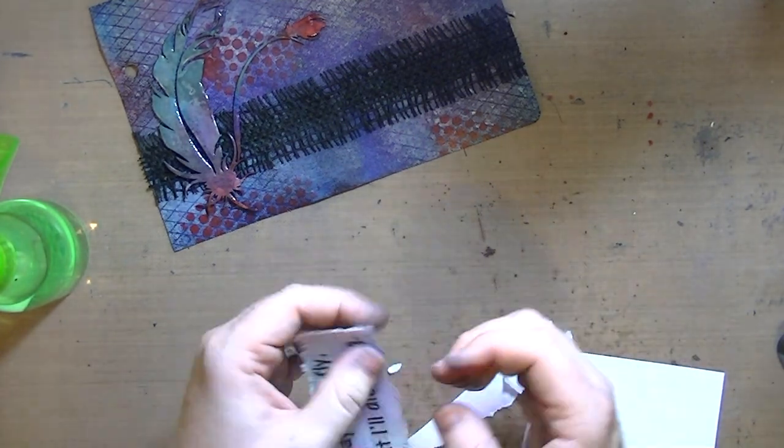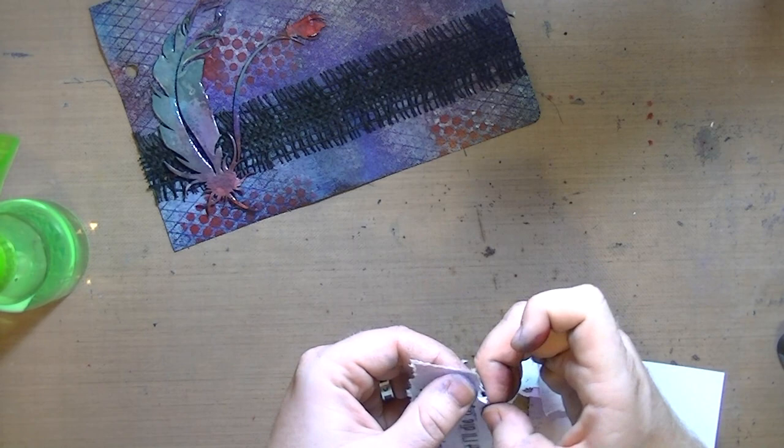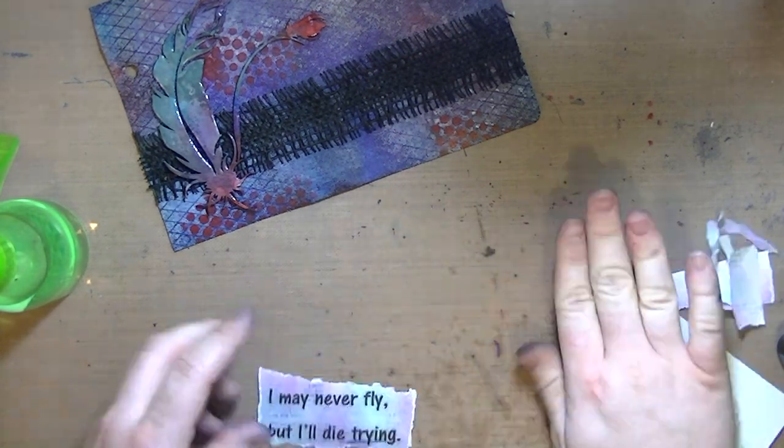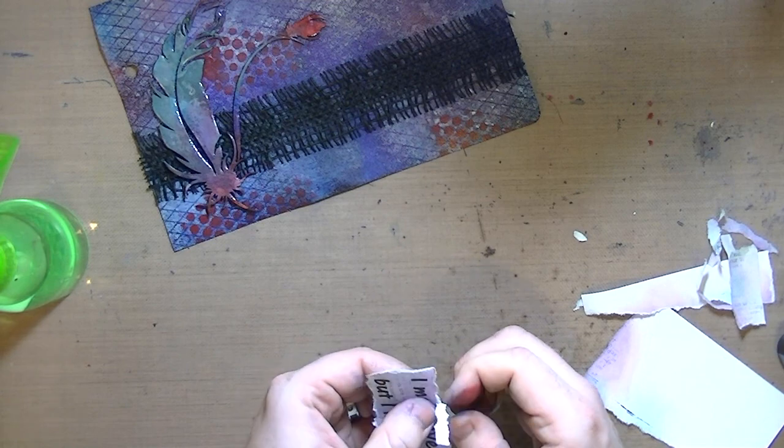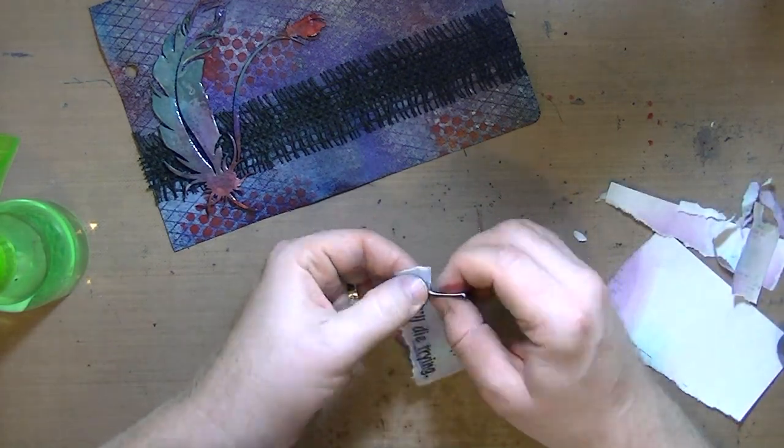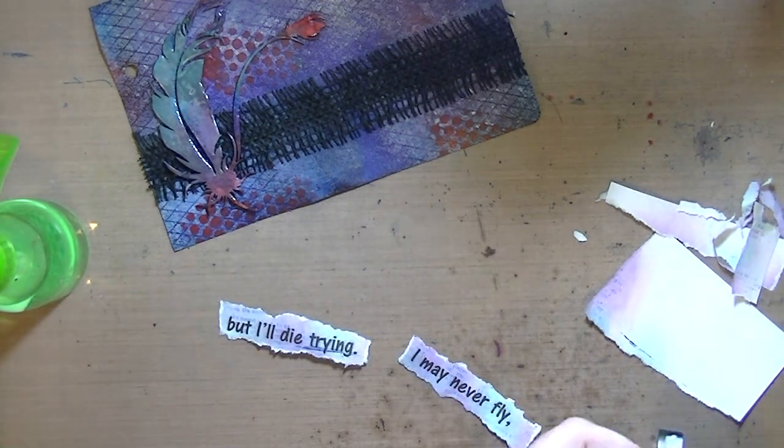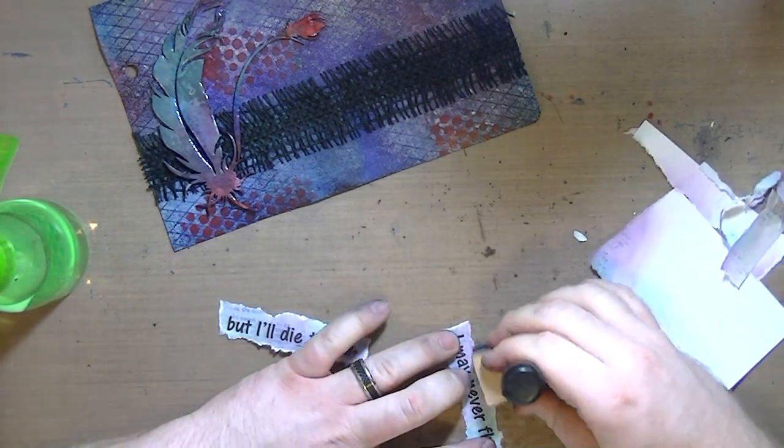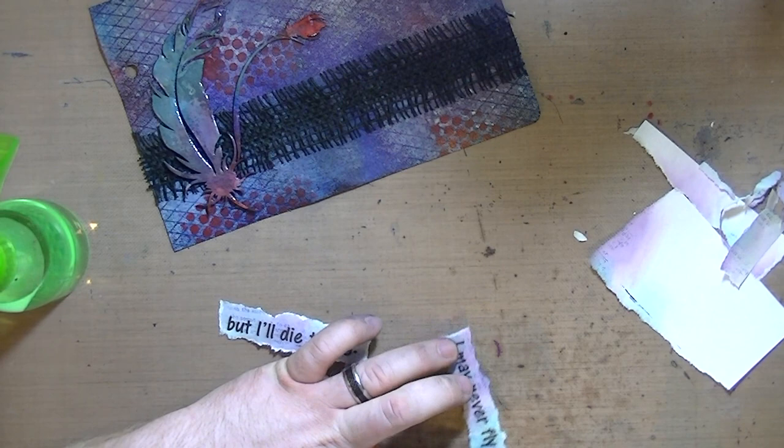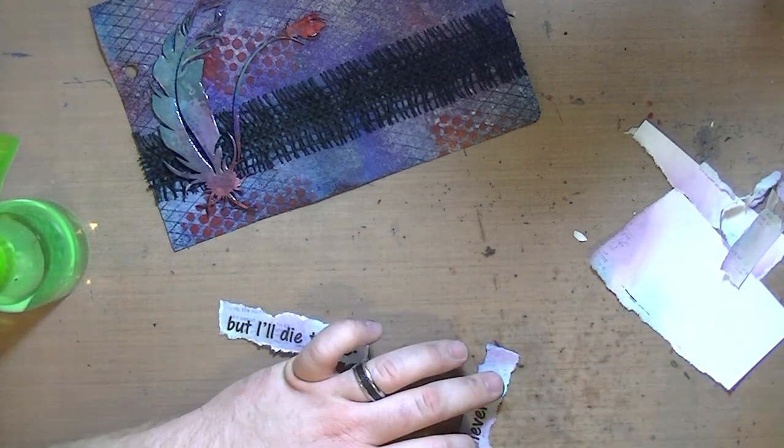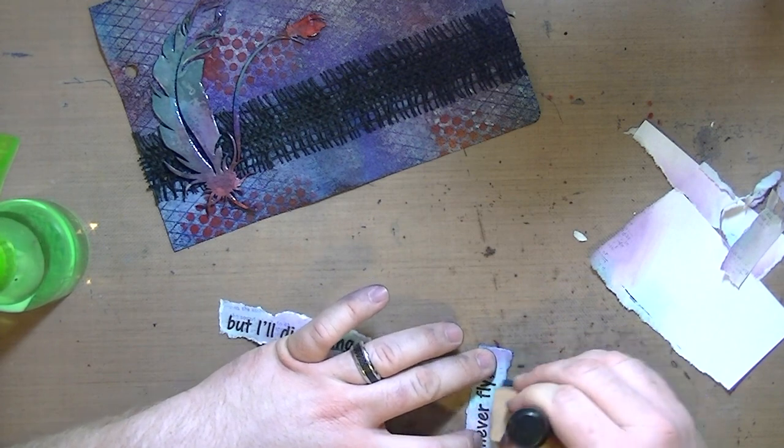I went with that one. I'm tearing all the sides toward me so that way there's some raw edge that I can ink up, doing the same thing with the middle. Then I'm just going to ink the edges and I think I used that chipped sapphire distress ink again.